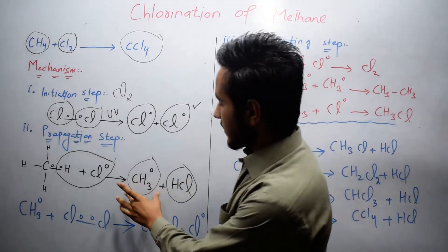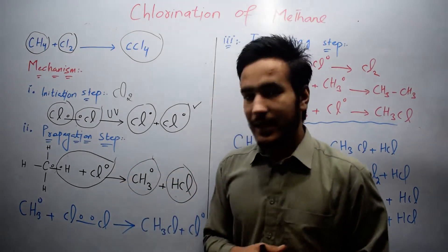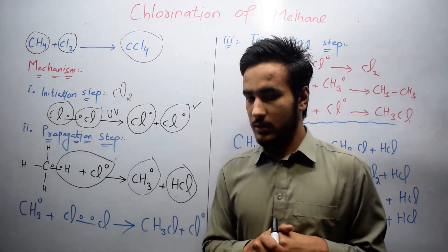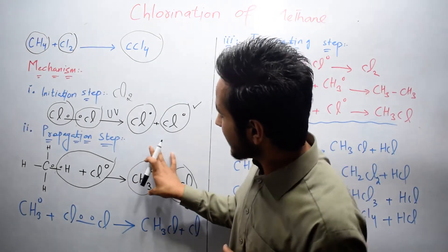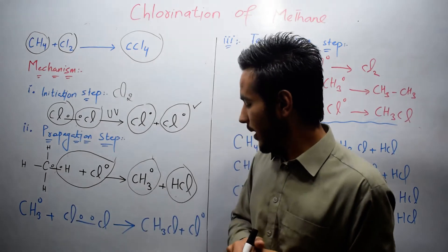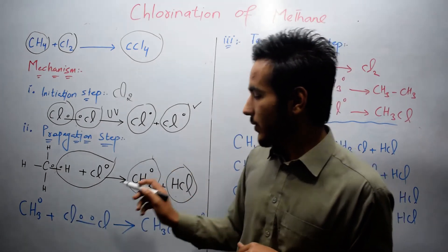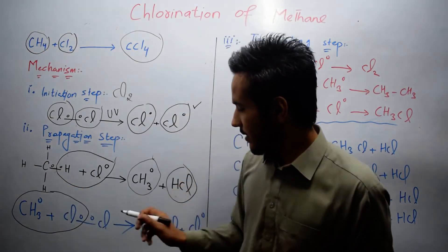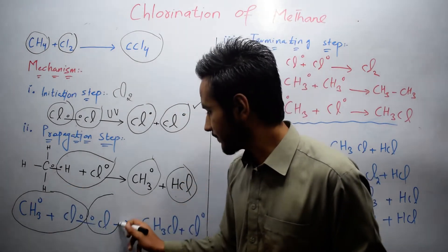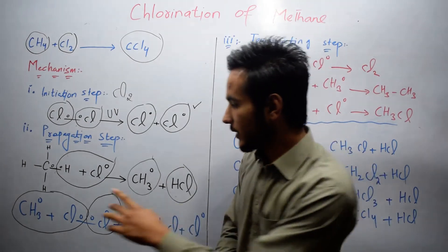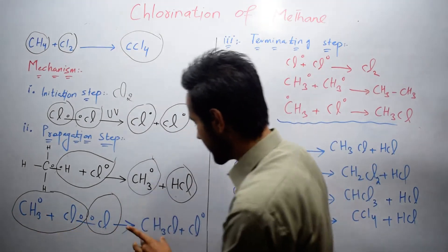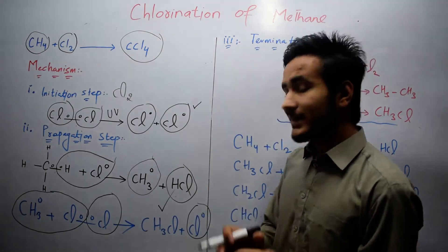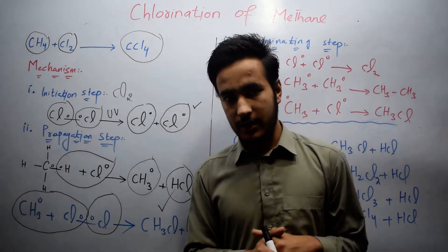Now this CH3 methyl radical will attack another chlorine molecule. When the methyl radical attacks another Cl2 molecule, it produces CH3Cl plus a new chlorine radical. This is a chain reaction — it does not stop because the new chlorine radical continues the cycle.